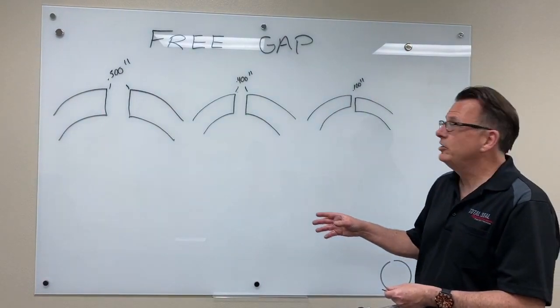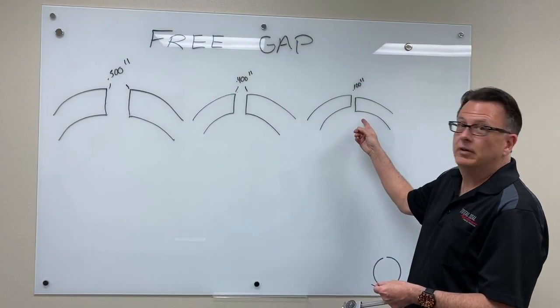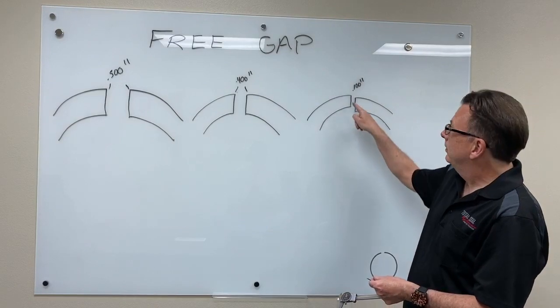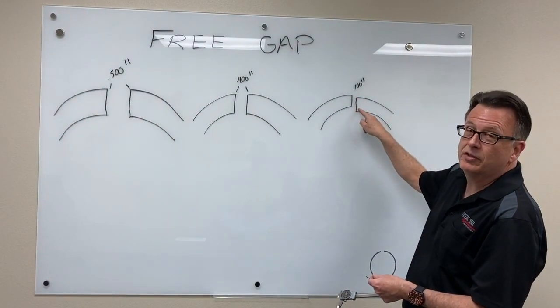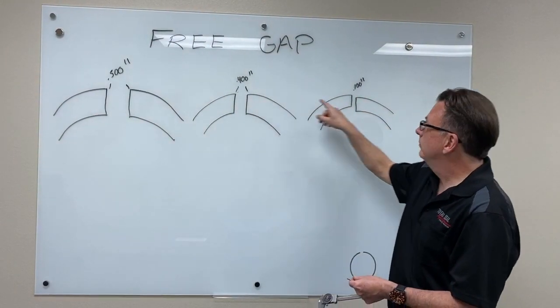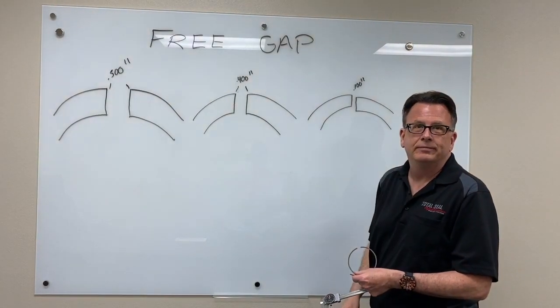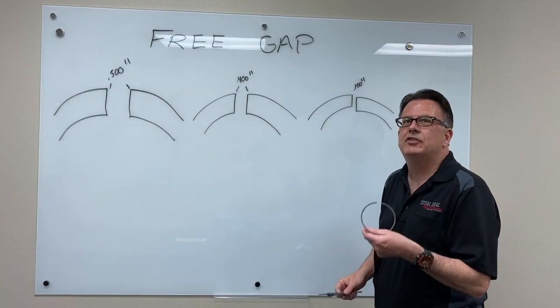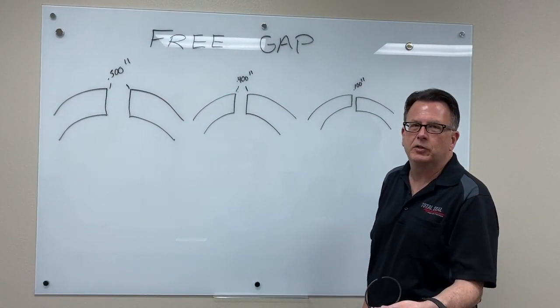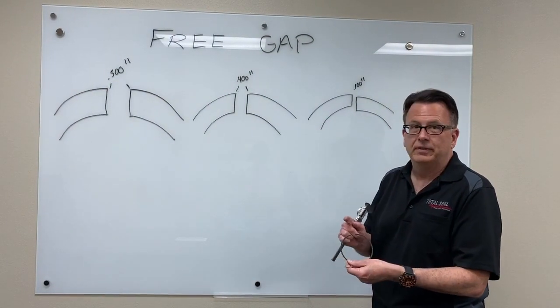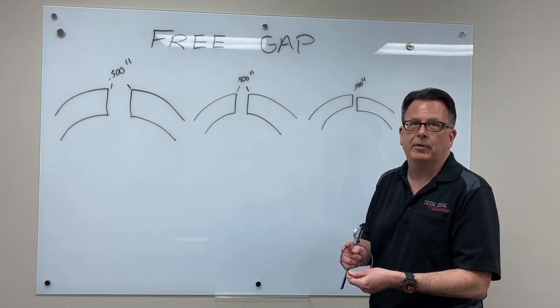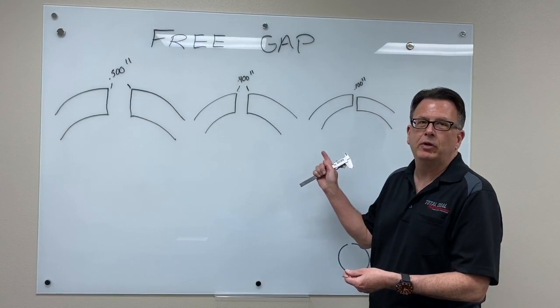But if for some reason we disassemble that engine, and we're seeing a 100 thousandths free gap, or the tips have dropped down on the rings, they no longer line up evenly, we've overheated that ring. That ring material can't survive the environment that it's been exposed to. Now we have to ask the question, do we pick a tough enough material for the application, or do we have a tuning problem?